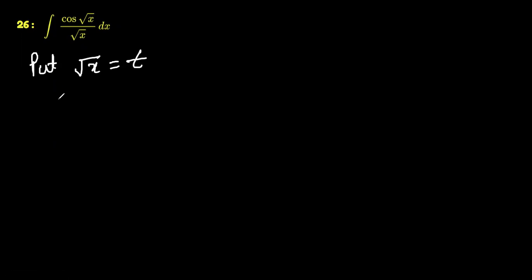Differentiation of the square root function is 1 over 2 root x. This means dx is equal to dt.